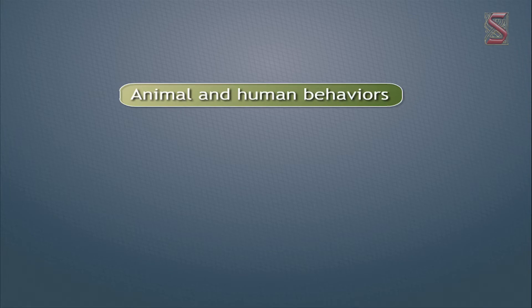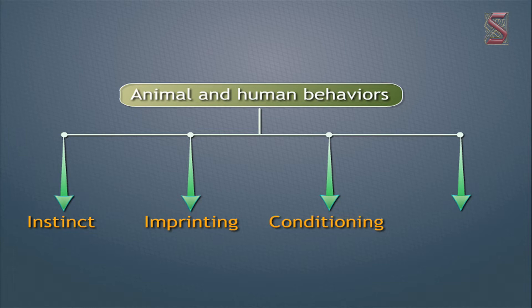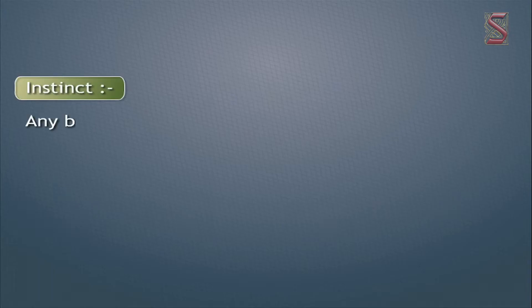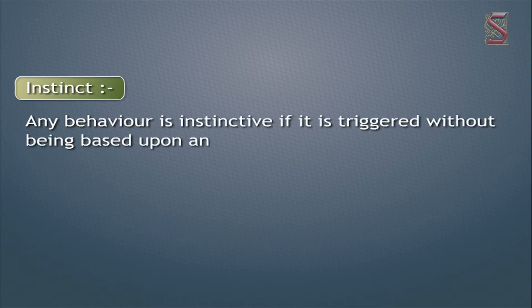Four types of animal and human behaviors have been researched and studied. They are: one, instinct; two, imprinting; three, conditioning; and four, imitation. Any behavior is instinctive if it is triggered without being based upon any prior experience.